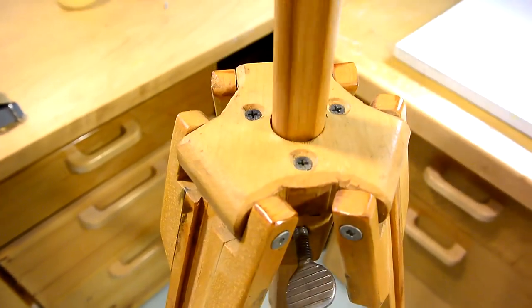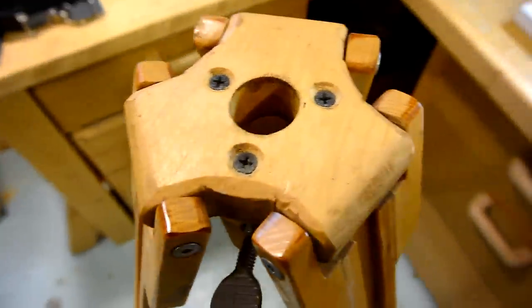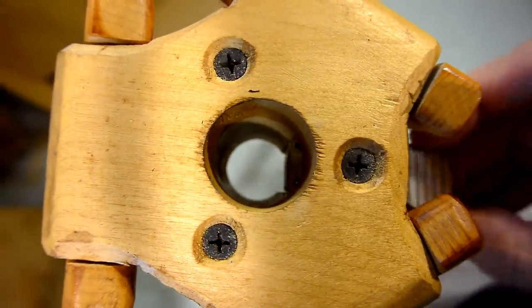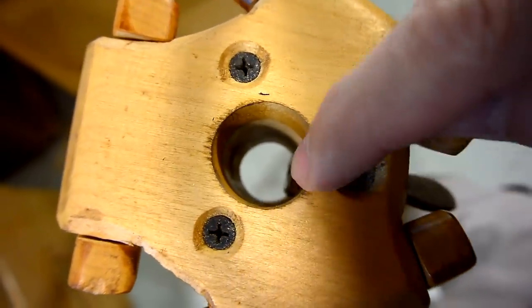And to keep that knob from damaging the shaft of the tripod, there's a little piece of metal in here so that the screw doesn't dig into it. It presses on a flat.